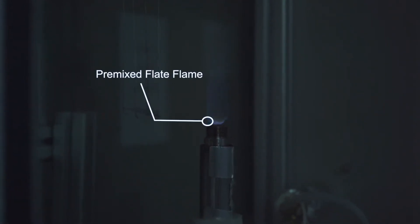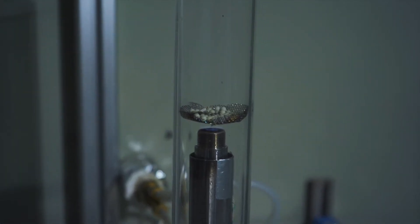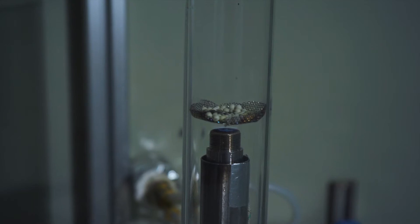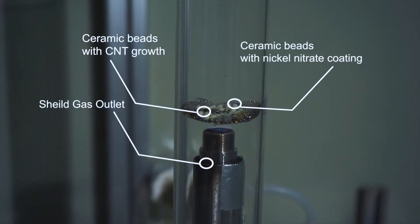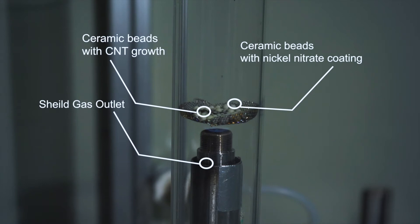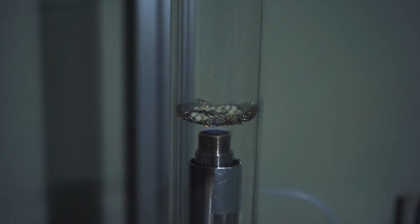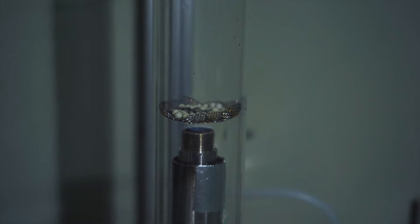To establish a flat premixed flame, the burner outlet is fitted with a sintered stainless steel metal. The ceramic beads are coated with a thin layer of nickel as catalyst for carbon nanotube growth. The catalyst coating process is incorporated in the process, with heated nickel vapour supplied into the synthesis chamber through the shield gas outlet at the burner. Carbon nanotubes are synthesized on top of catalyst-coated spherical beads placed close to the flat flame, which produces the maximum carbon nanotube growth region.